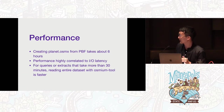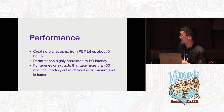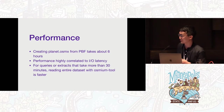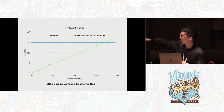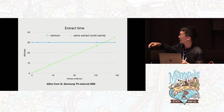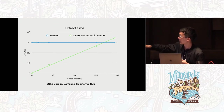On performance: creating the planet.osmx from a PBF file still takes about six hours on a desktop computer, and performance really depends on how fast your hard drive is. For queries or extracts that take more than 30 minutes, using Osmium tool is generally faster. In benchmarking — with number of nodes in your extract on the x-axis and minutes on the y-axis — because Osmium always does one pass through the entire file it takes about 30 minutes on a laptop. If you use osmx extract, small areas are really fast, but once you get above about 150 million nodes, it's faster to just use Osmium.